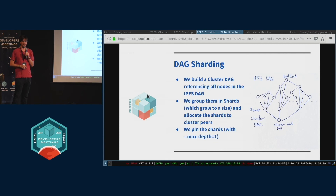The DAG cannot reference itself because it's acyclic — that's why the question is naive. But that would be... I guess this is more of the IPLD world. It just cannot make a cycle. This would break other things than cluster. So I'm pretty sure there's no risk. Thank you.